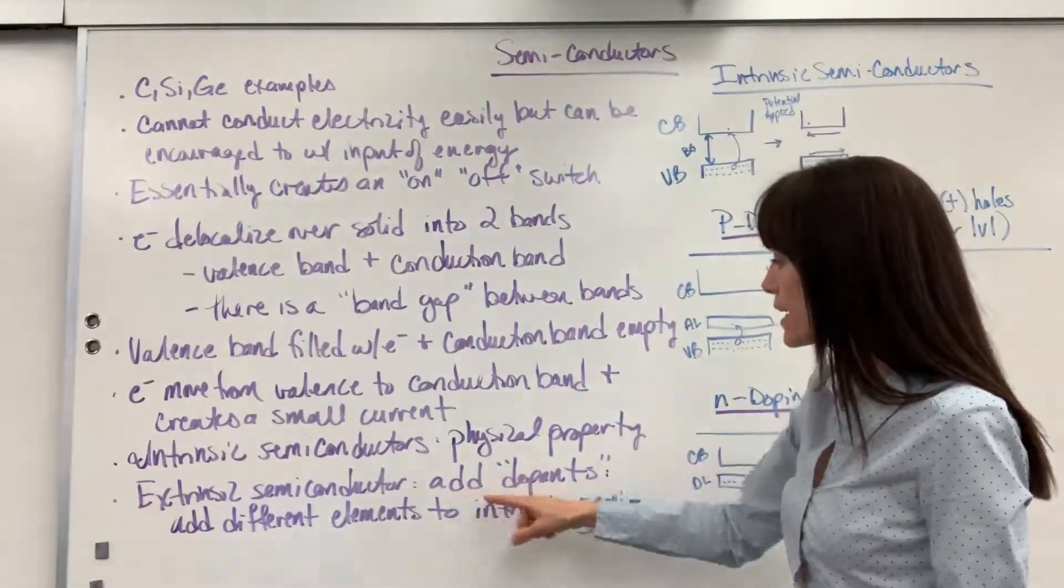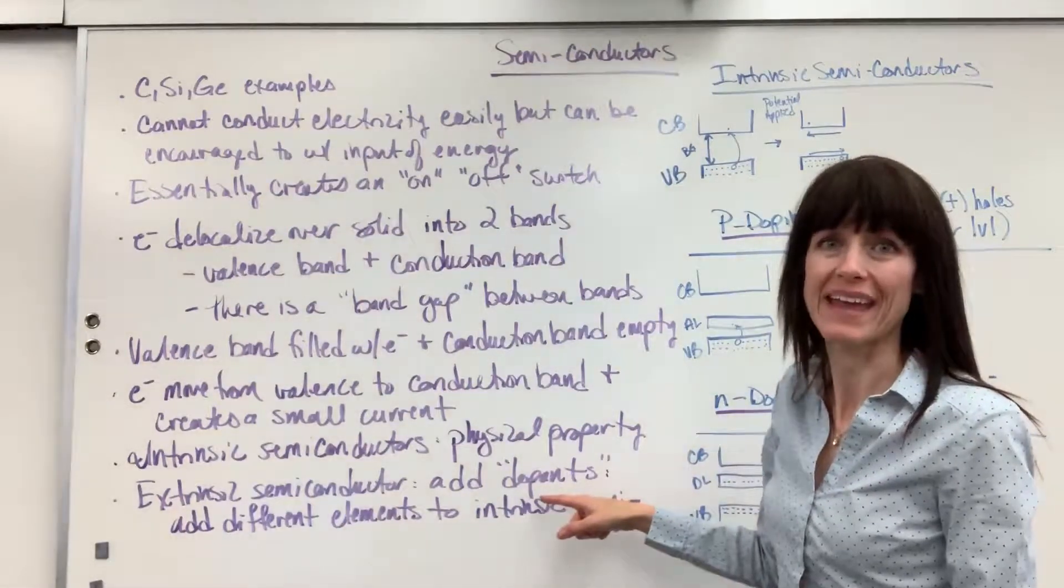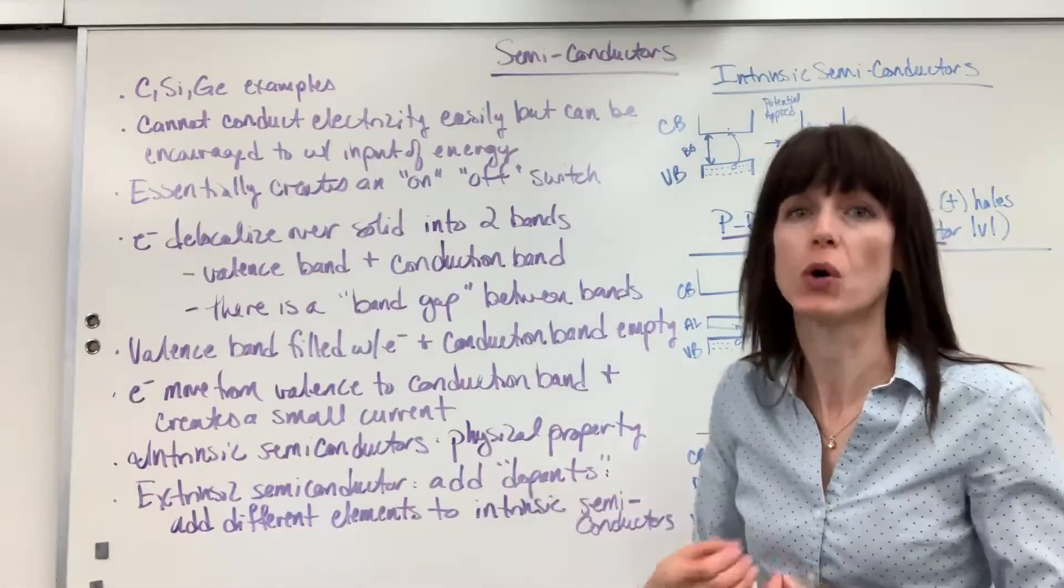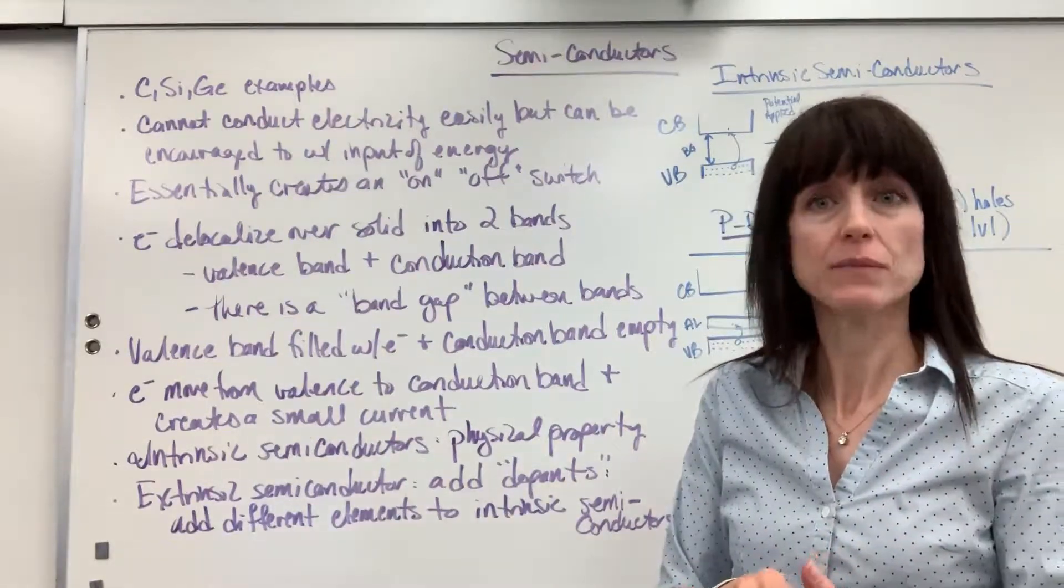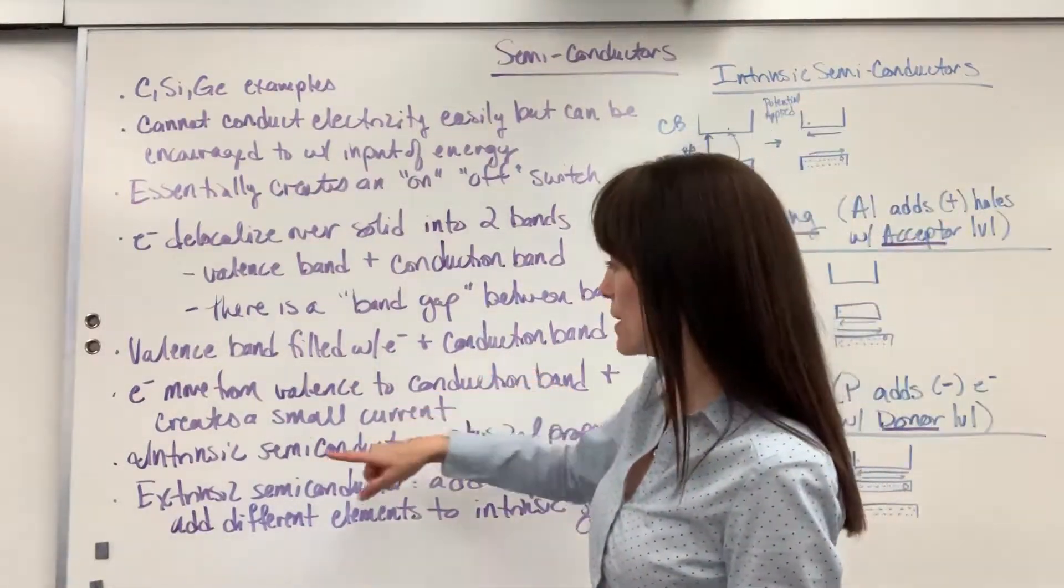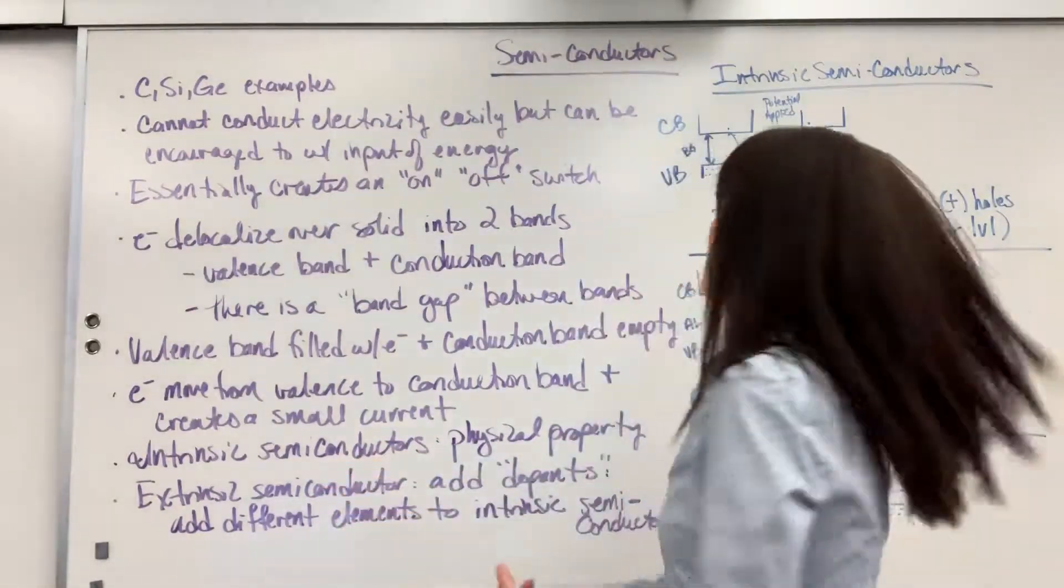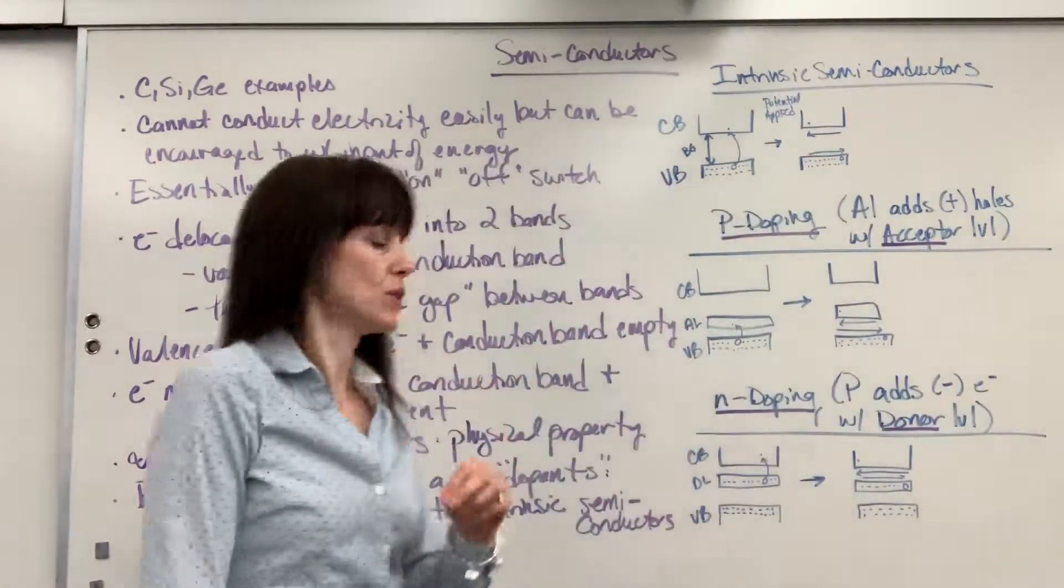Now we have extrinsic semiconductors, and this is where we do some tweaking. It is called adding a dopant. D-O-P-A-N-T. Adding a dopant. We're doping. And that simply means that we add a couple of different atoms to the intrinsic semiconductor. So, we have two types of doping.